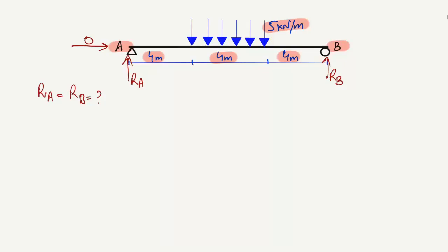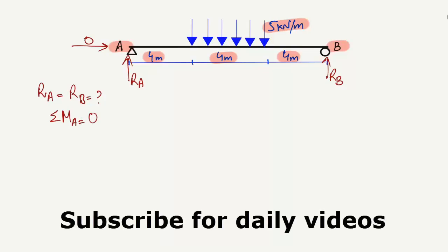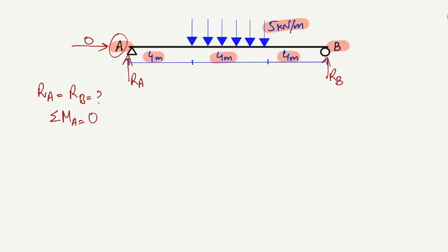To find the support reactions, we use the equilibrium equations. One equilibrium equation is: summation of moments at any point equals zero. We assume summation of moments at point A equals zero. The moment is equal to the force multiplied by the moment arm.